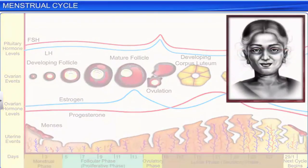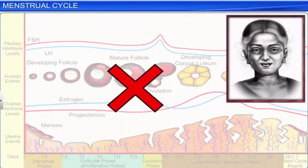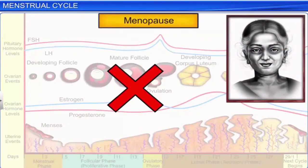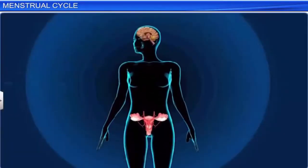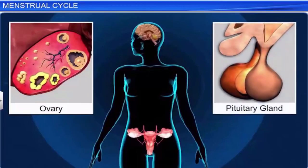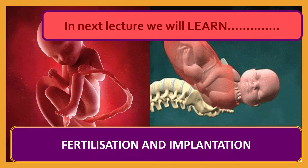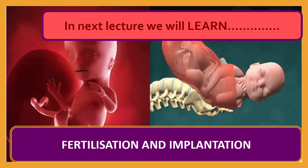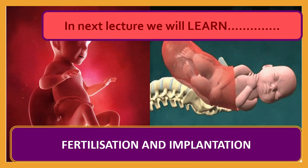Menstrual cycles normally stop once a woman reaches her 50s — this phase is called menopause. The menstrual cycle is an important process in a woman's body, consisting of four phases controlled by hormones released by the ovary and the pituitary gland. In the next lecture, we will learn about fertilization and implantation.